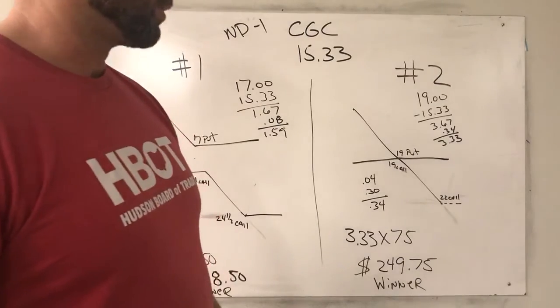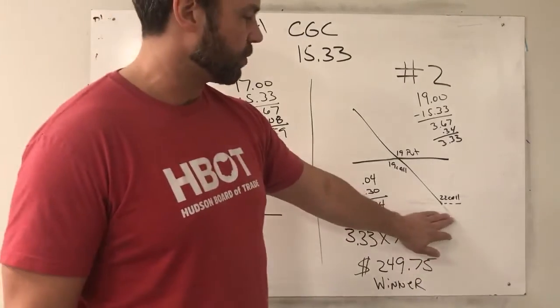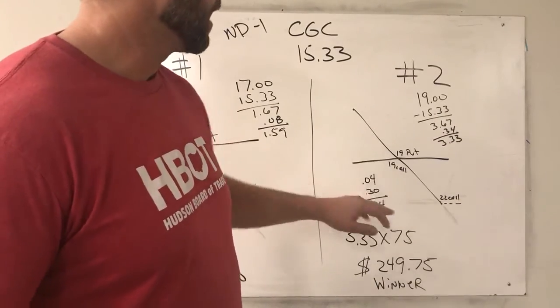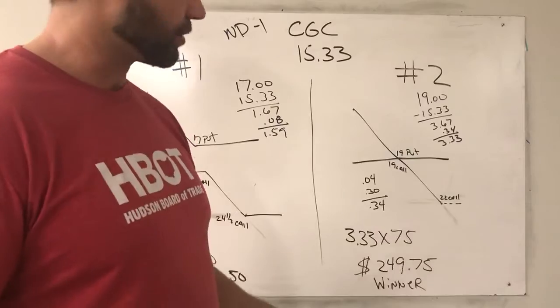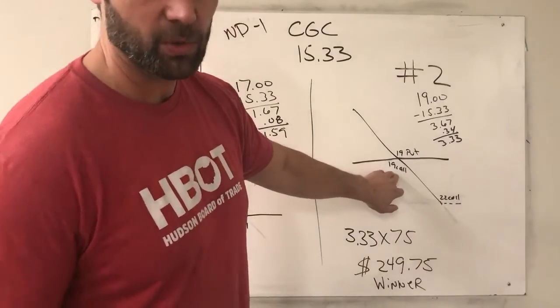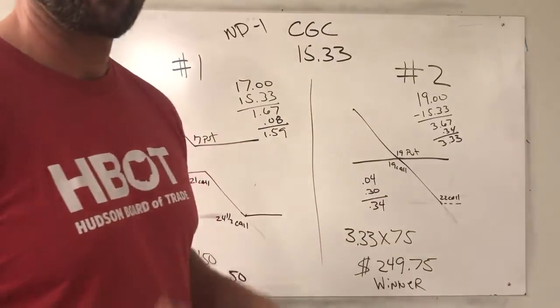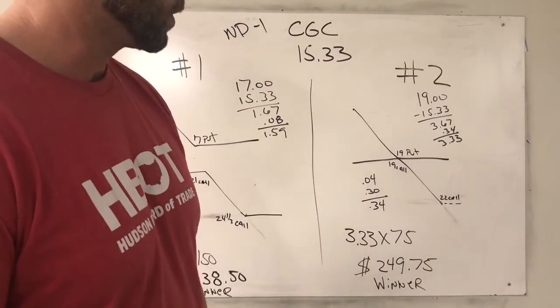And then we bought in the 22 call for 33 cents, bringing us the cost of the trade of 30 cents. After earnings came out, the stock dropped. We bought in our risk, which was the 19 call, and we bought that in for four cents. So we're into the entire trade for 34 cents a share.